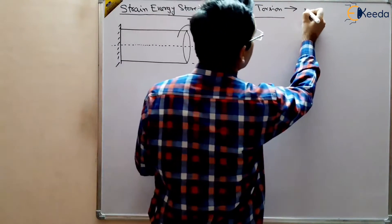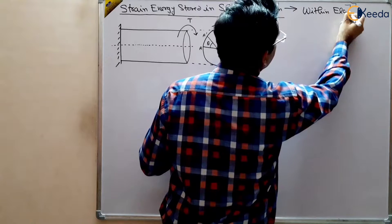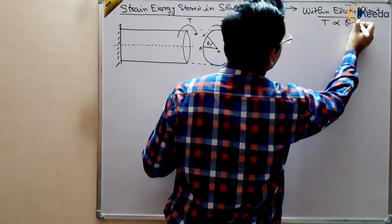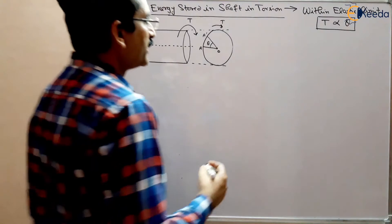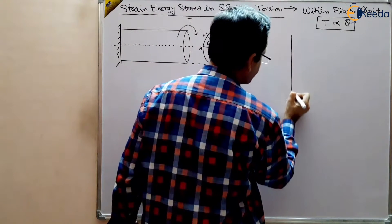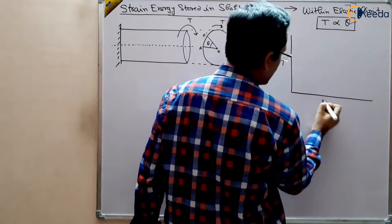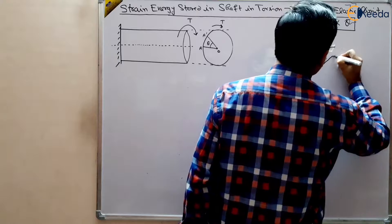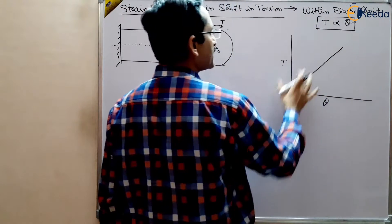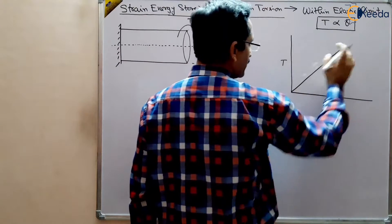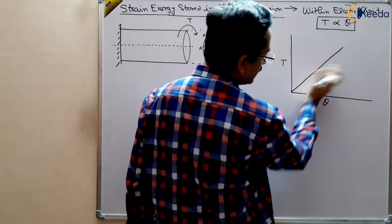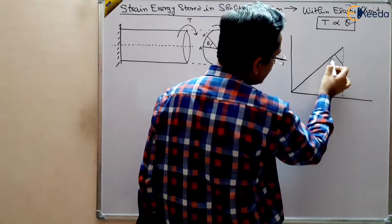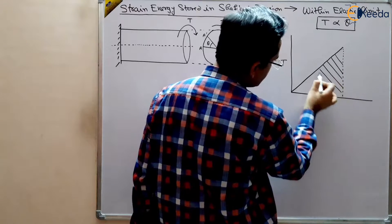Within the elastic limit, T is basically proportional to theta. If we draw a diagram between torque T and the angle of twist theta, we will get a straight line up to a certain point and then there will be a variation in the curve. Within the elastic limit, this will be the variation of the T-theta curve. This is a straight line, not necessarily at 45 degrees.